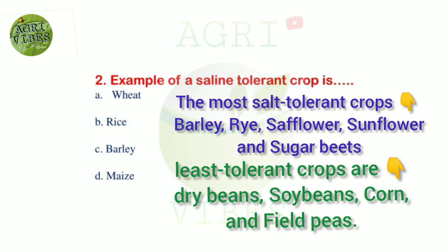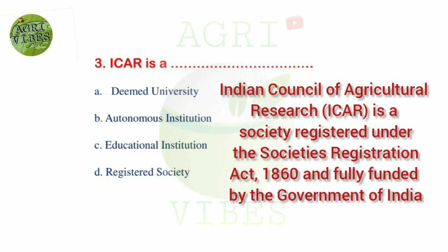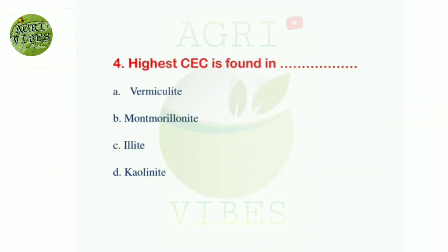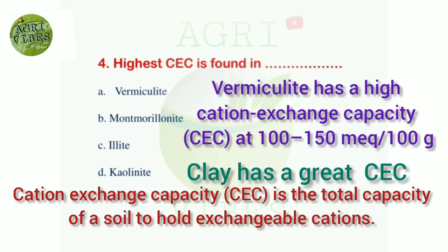Next: ICAR is a — options: deemed university, autonomous institution, educational institution, and registered society. Correct answer is option D, registered society. Next question: highest cation exchange capacity (CEC) is found in — options: vermiculite, montmorillonite, illite, and kaolinite. Correct answer is option A, vermiculite. Highest CEC is found in vermiculite.